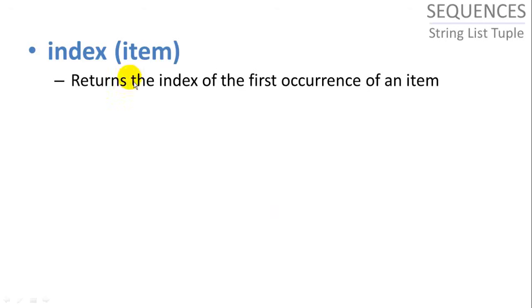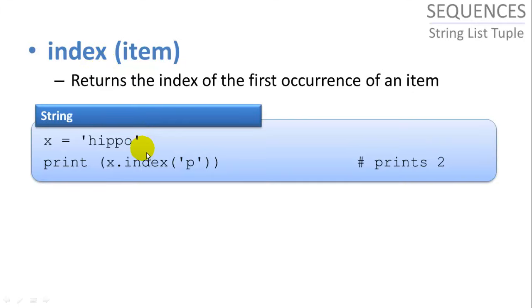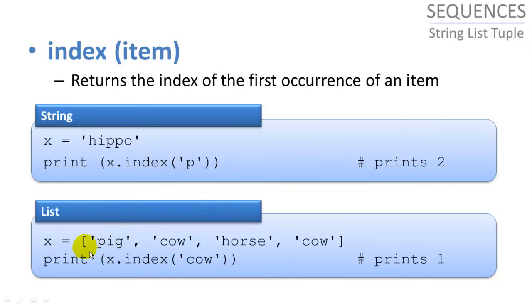If we want to find the index of an item, the index function actually returns the index of the first occurrence of an item. So if the item is in the list or sequence multiple times, it returns the index of the first occurrence. So here the h is 0, the i is 1, the p, the first p, is 2. So x dot index of p is going to return 2. And here we find the first cow, which has an index of 1.